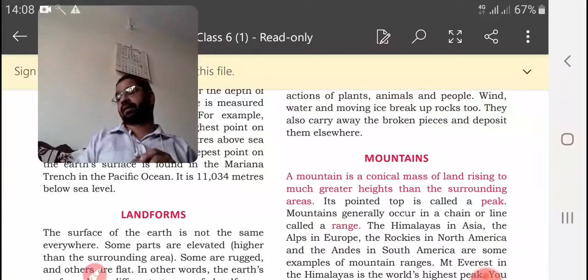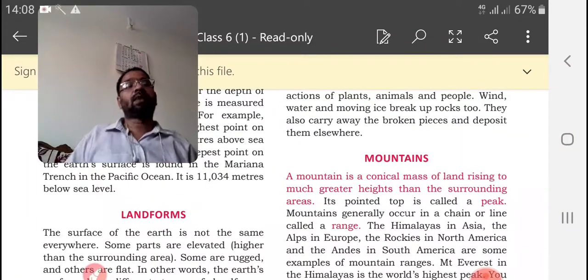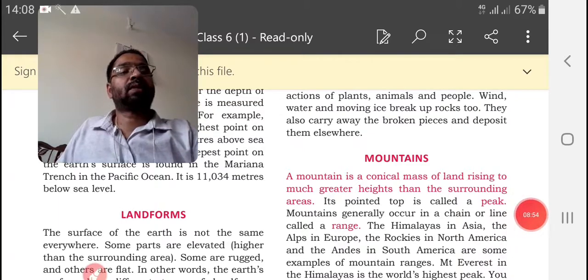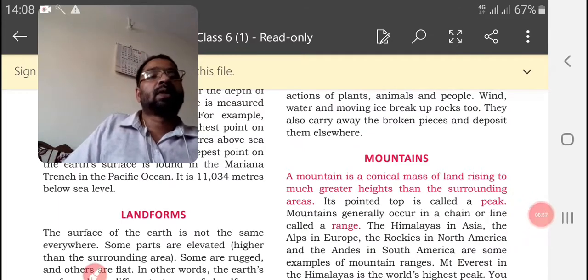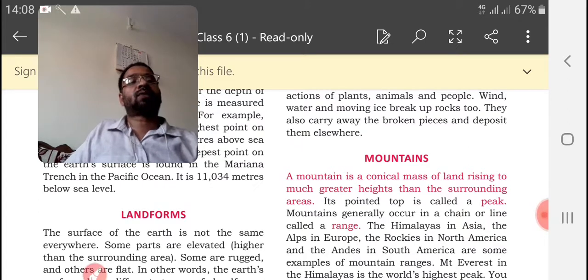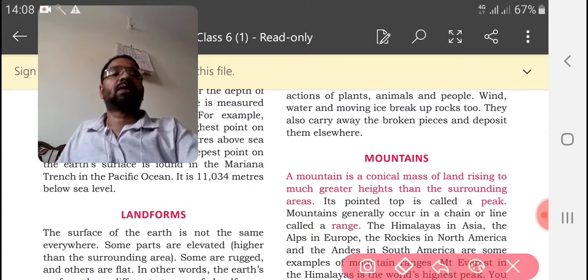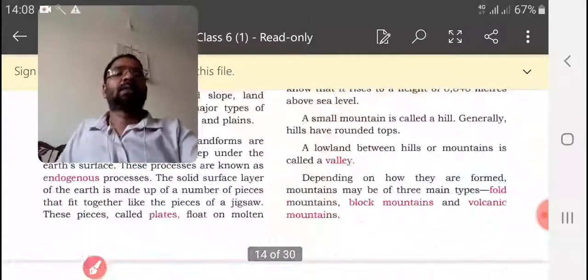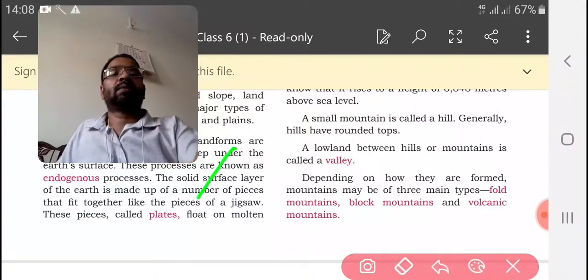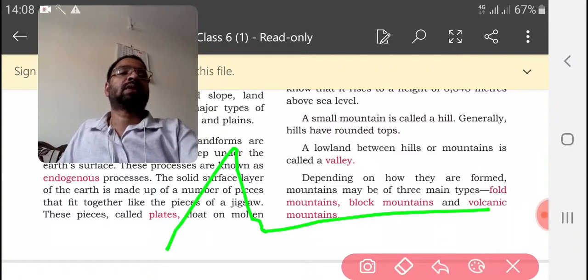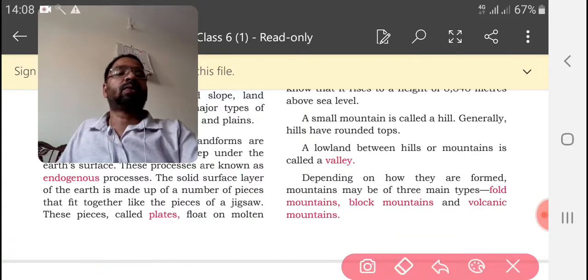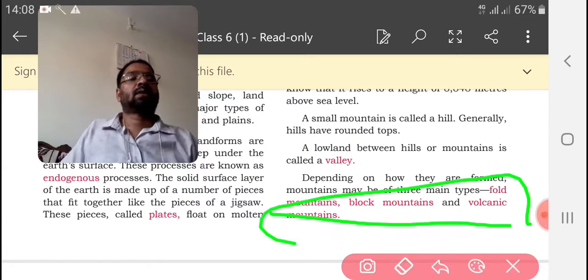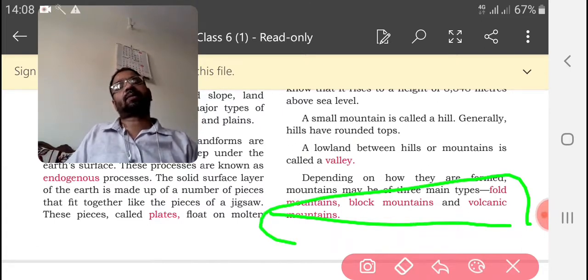Now we are getting another thing: mountains. One shape of the earth. A mountain is a conical mass of land rising. Then next, valley. Valley means below the mountain, bottom of mountain some plain area. This is known as valley. And mountain can be divided into three: one is fold mountain, block mountain, and volcanic mountains. These are the three types of mountains.